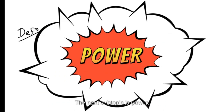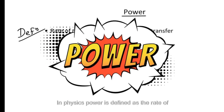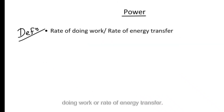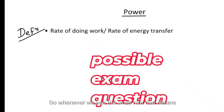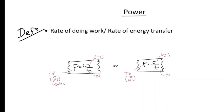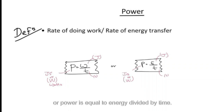Power is defined as the rate of doing work or the rate of energy transfer. Since 'rate' means dividing by time, the formulas are: power = work done ÷ time, or power = energy ÷ time.